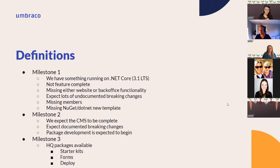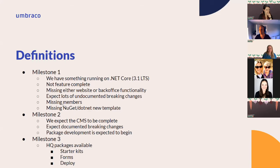We've defined milestone one as having something running on .NET Core — we're aiming for 3.1, which is the current long-term support. It will not be feature complete; it will be missing either website or back office functionality. At this point you can still expect a lot of undocumented breaking changes between versions, everything about members will be missing, and there won't be a nice install experience — no NuGet packages and no 'dotnet new' template.